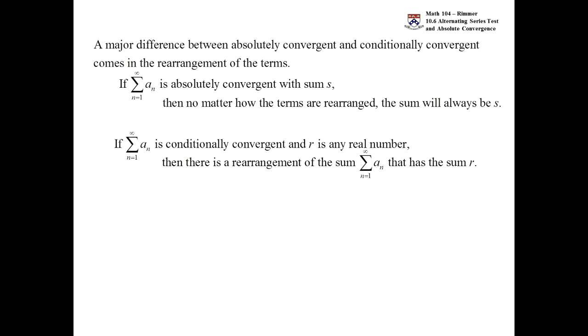Here's an example. The alternating harmonic series that we saw was convergent by the alternating series test. One minus a half plus a third minus a fourth and keep on going forever. We'll find out later that that is actually equal to the natural log of two. It's a very slow convergence but it converges to the natural log of two.